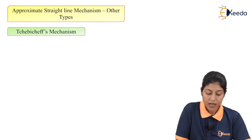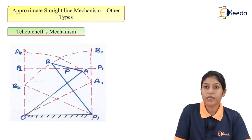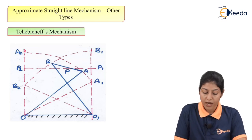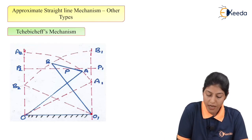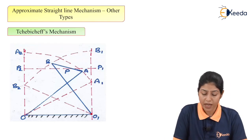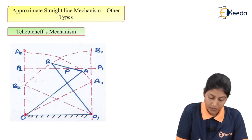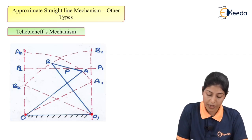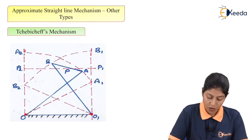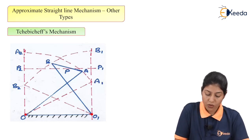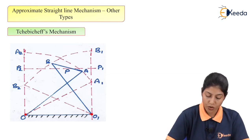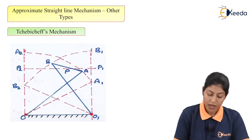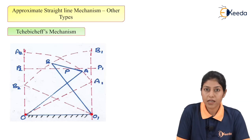The third type of mechanism is the Chebyshev mechanism. Here we consider one fixed link OO1, and the other three links are AB, OA, and O1B. This is a crossed four-bar chain mechanism. O and O1 form turning pairs with the fixed link OO1, so their positions do not change. With the help of O and O1, OA moves with respect to O and O1B moves with respect to O1, and AB is considered as the coupler or coupling rod.